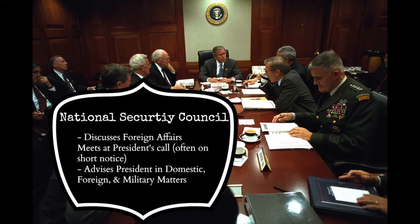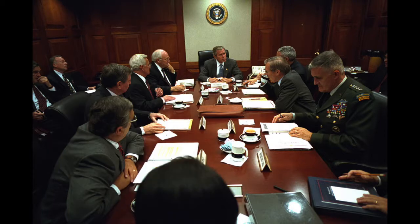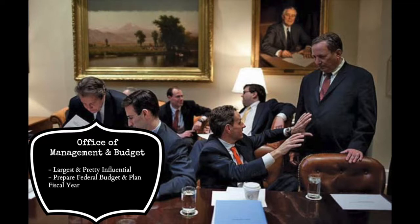Most of the president's major steps in foreign affairs are taken in close consultation with the National Security Council, which meets at the president's call — often on short notice — to advise him on all domestic, foreign, and military matters relating to national security. Another important office is the Office of Management and Budget, the largest and most influential unit in the EOP after the White House. The OMB is headed by a director appointed by the president and confirmed by the Senate, and its major task is the preparation of the federal budget submitted to Congress every year.